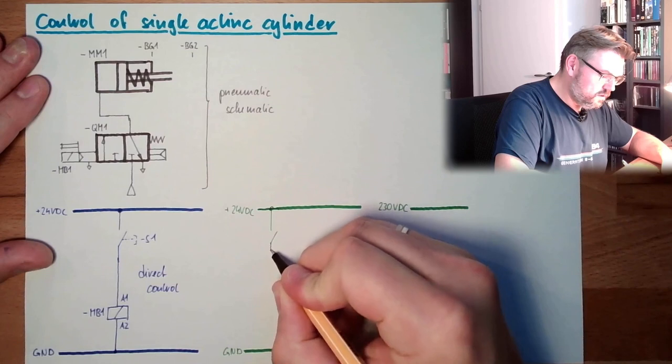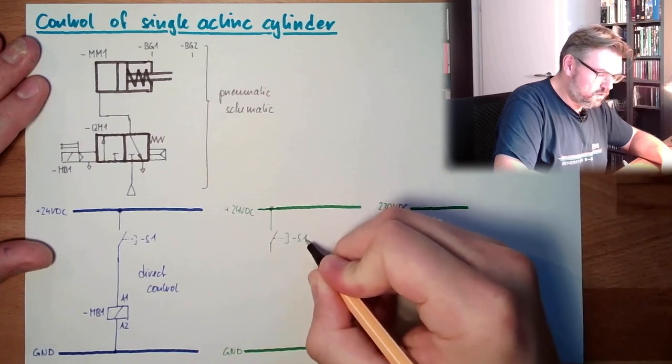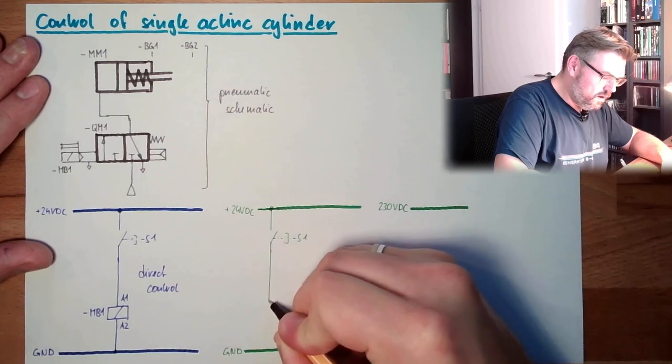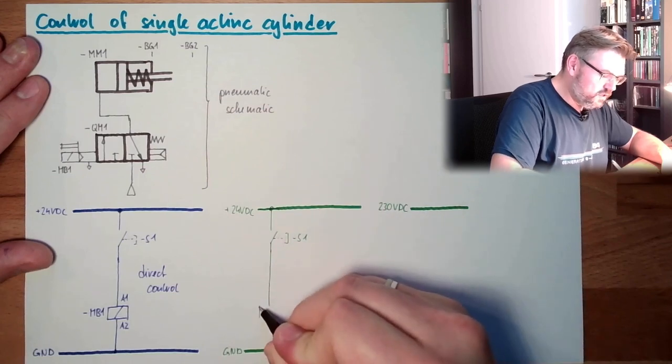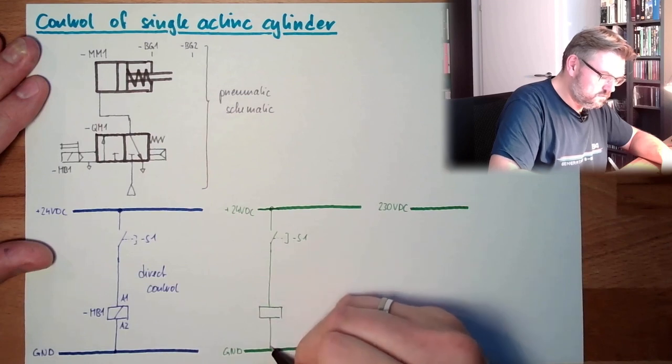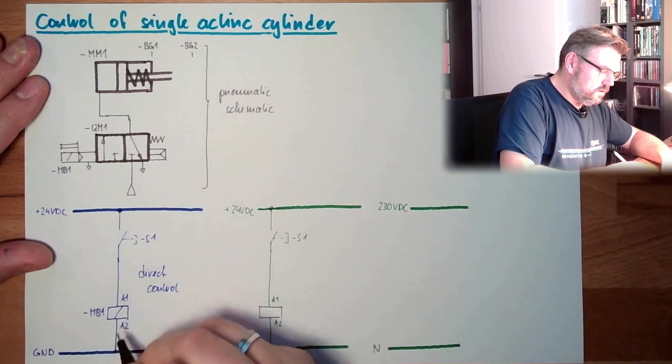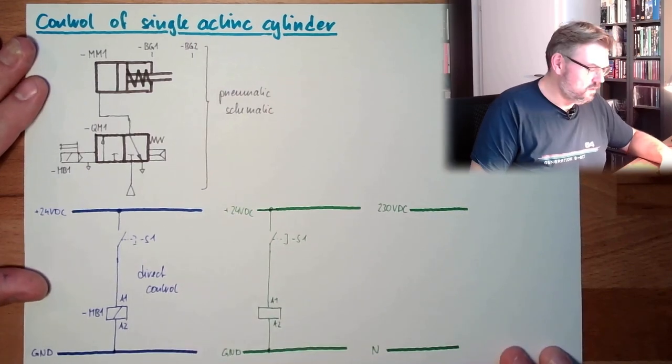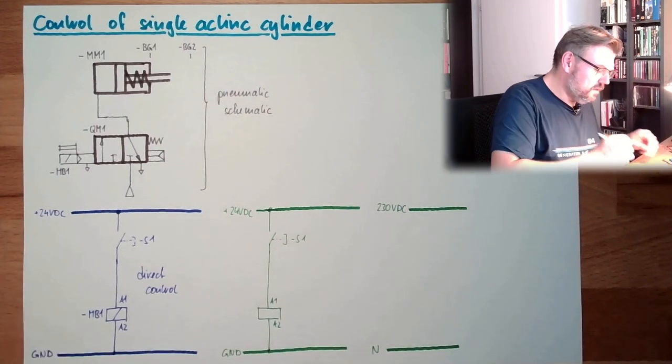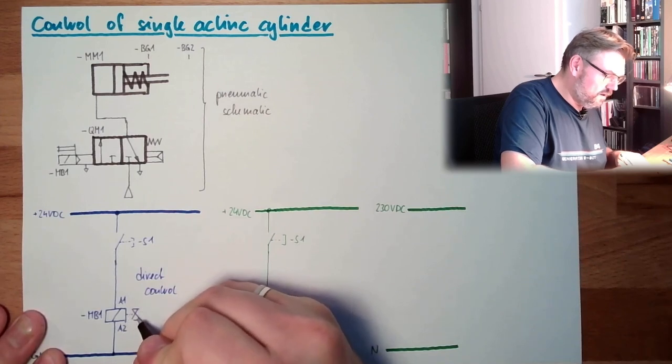For instance, here, this is working pretty much the same. I have the switch. If I press this switch, S1, I want something to happen. However, I'm not switching directly the valve. Maybe closer here.